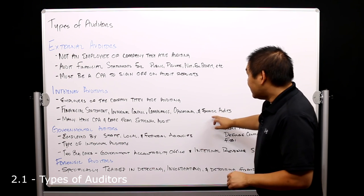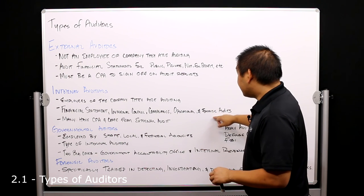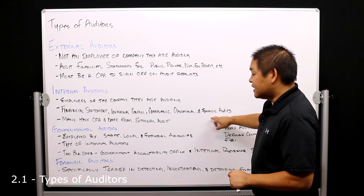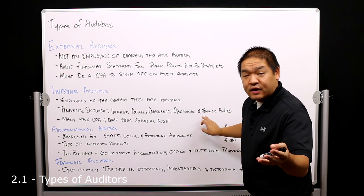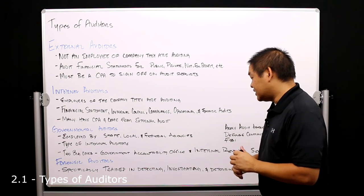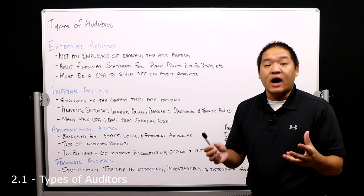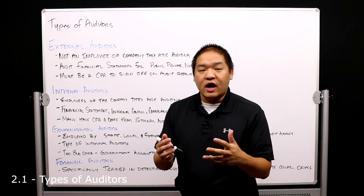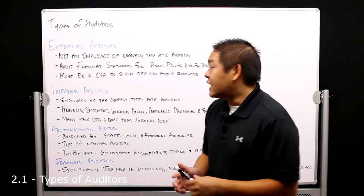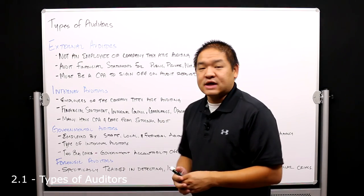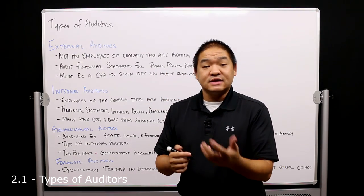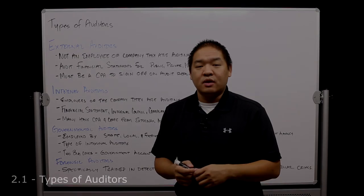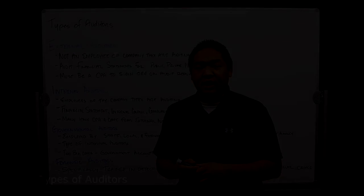So we talked about up here that these internal auditors can do forensic audits, and what forensic auditing is is specifically trained in detecting, investigating fraud. So they want to catch fraud early on. That gives you a little bit of an idea of the different types of auditors. In the next lesson we're going to talk more specifically about public accounting firms.